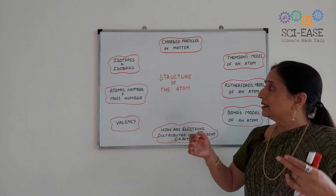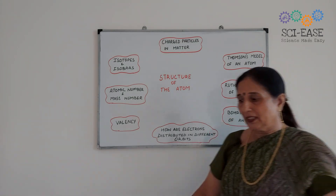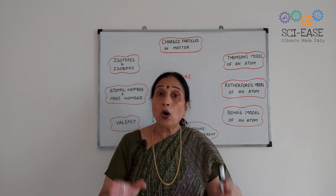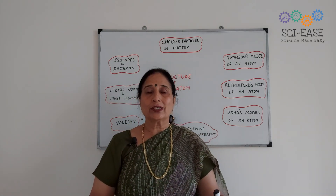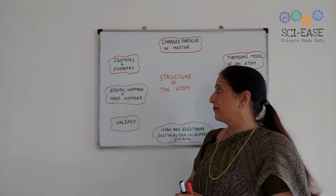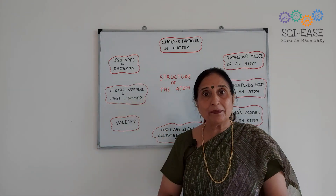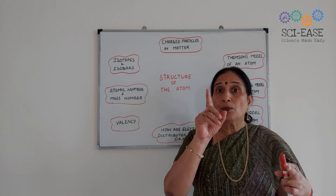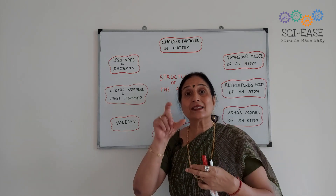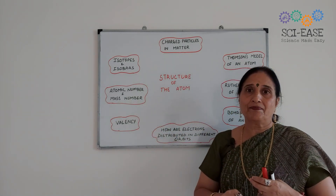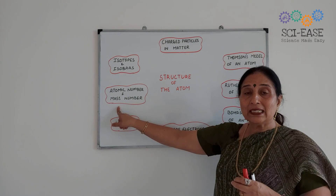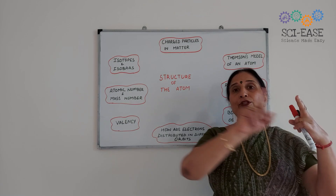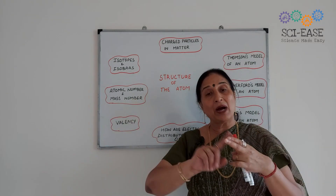The next topic is atomic number and mass number. Atomic number is the number of protons or the number of electrons present in the neutral atom. Mass number is the sum of protons and neutrons present in the nucleus of an atom. You are to memorize the atomic numbers and mass numbers of the elements from hydrogen to calcium.